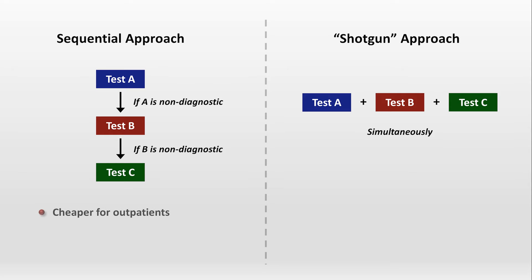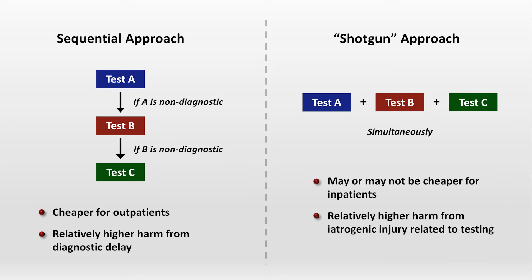The sequential approach is cheaper for outpatients, though it results in relatively higher harm from potentially delaying a diagnosis. The shotgun approach may or may not be cheaper for inpatients, since it results in more tests, but in some circumstances may result in a shorter hospital stay. The shotgun approach has a relatively higher harm from iatrogenic injury related to testing.